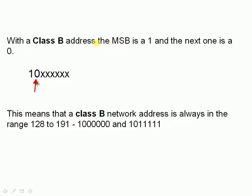For class B, the zero moves from the first position into the second position. So the most significant bit is a one, the second is a zero, and after that we don't care — they can be zeros or ones. Converting back into binary, we get 1,0,0,0,0,0,0,0 at the low end and 1,0 followed by all ones at the high end. That gives us a range of 128 to 191. So a class B address has an address range of 128 to 191.